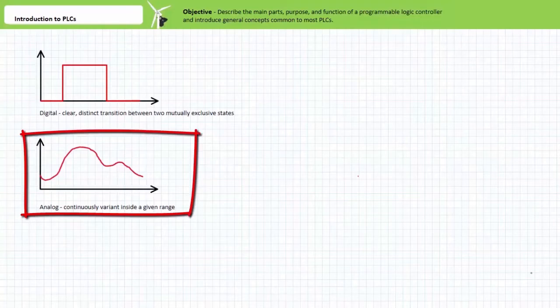An analog signal in contrast is one that is continuously infinitely variant inside a given range. A pressure sensor would be an example of an analog input in that it sends a proportional electrical output based on input pressure. More pressure results in more voltage.